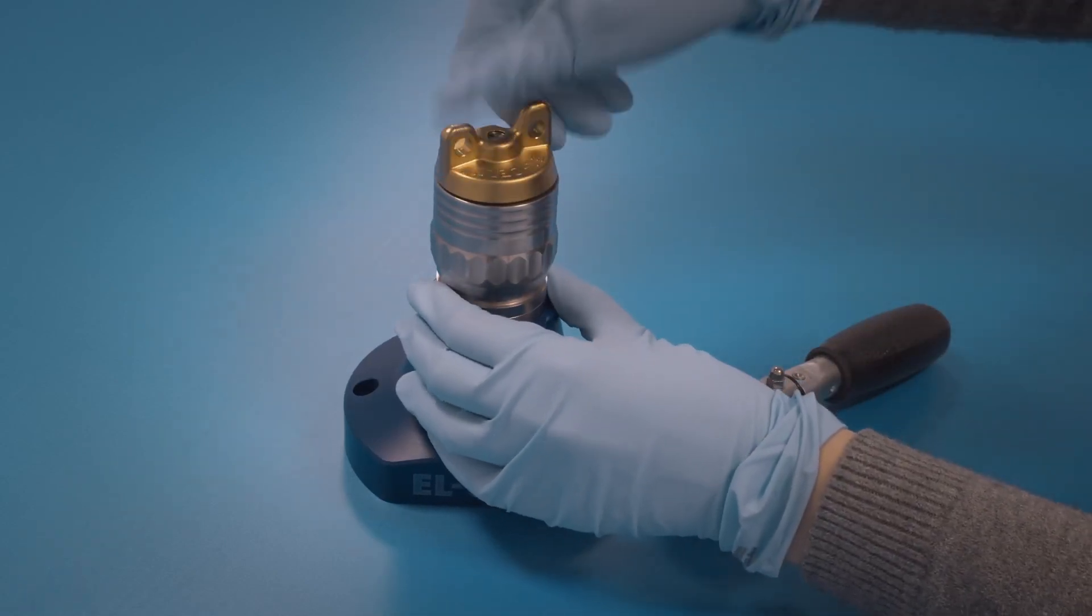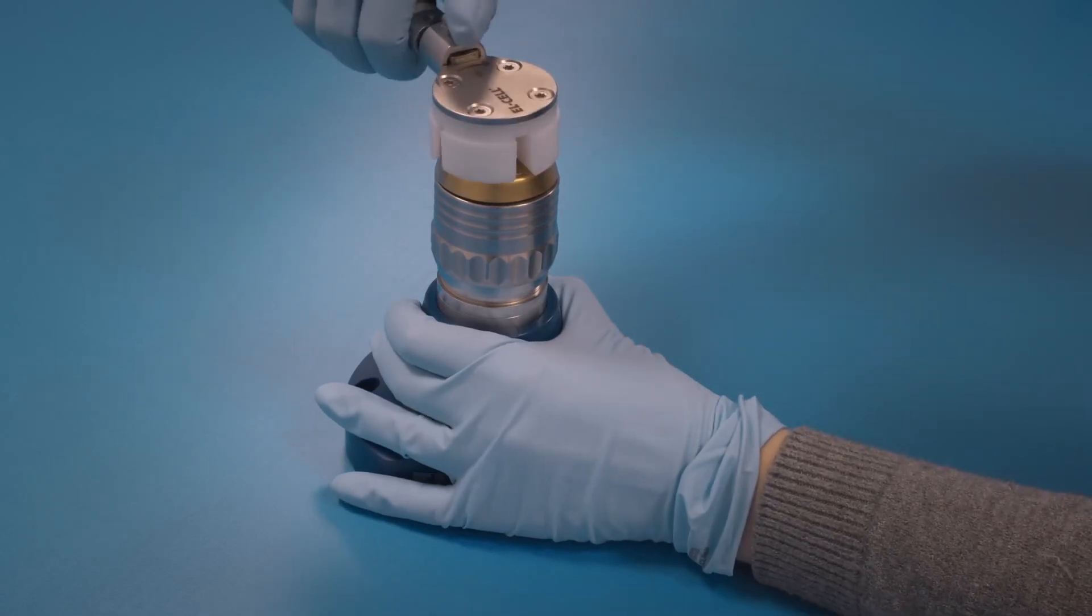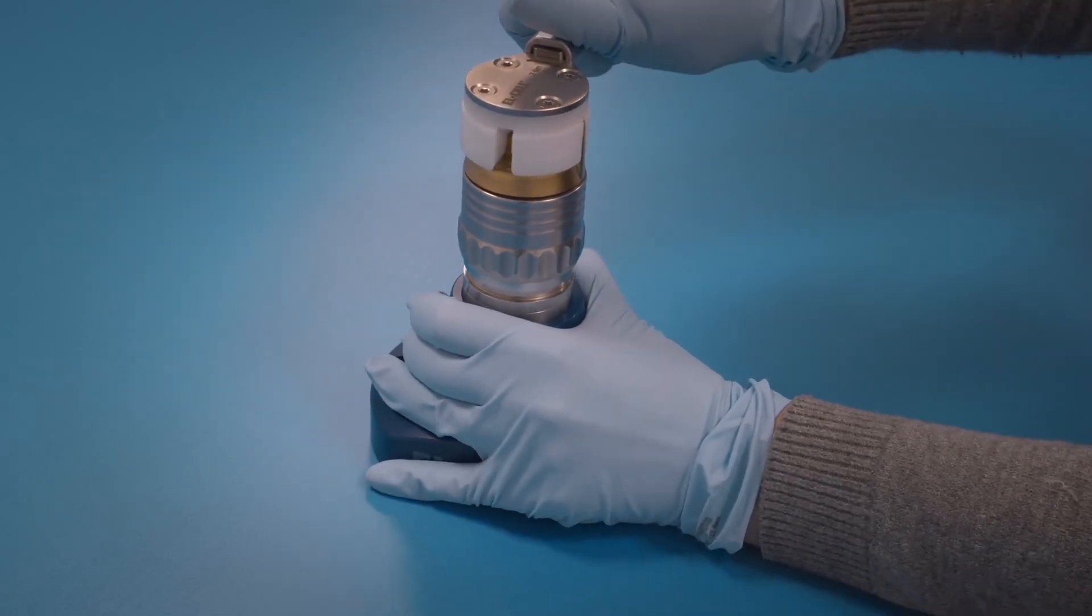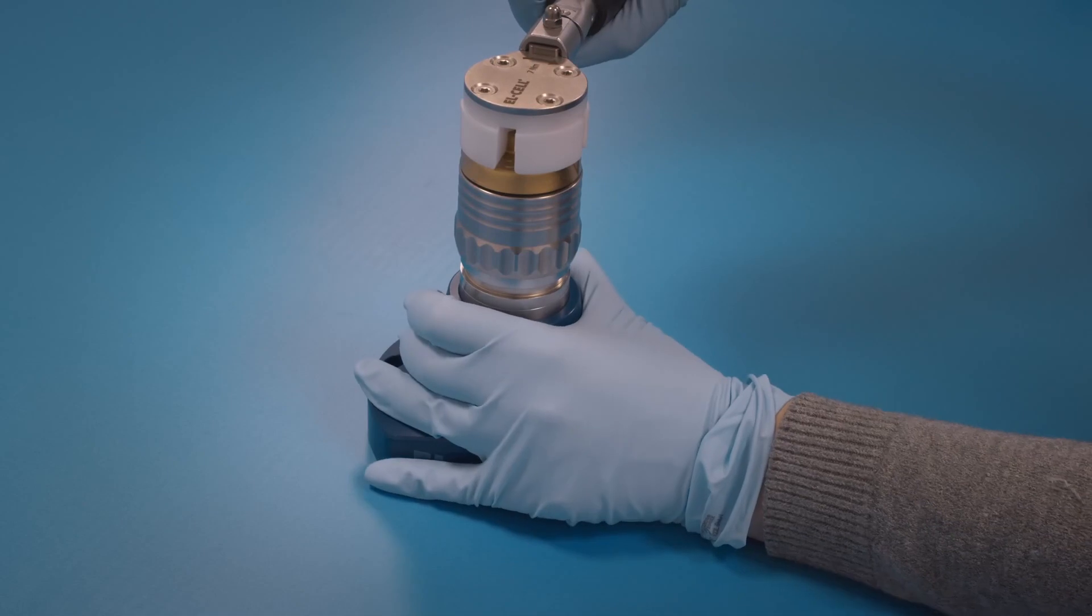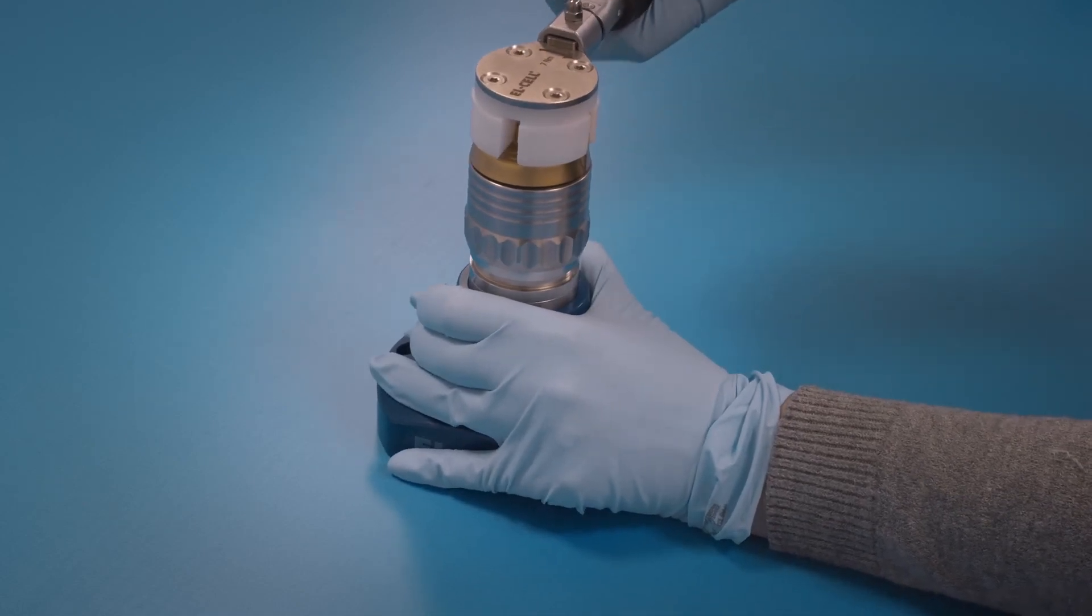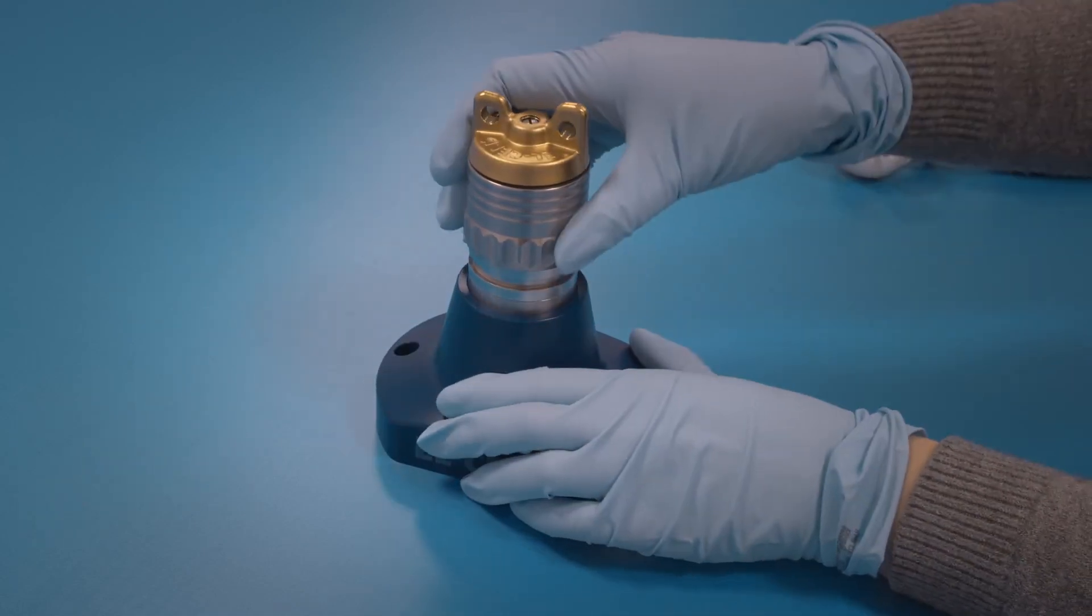And then tighten the cell lid with a provided torque controlled wrench. You can also use a standard polyethylene seal. Then no need to use this torque control.